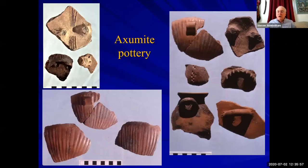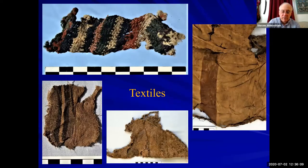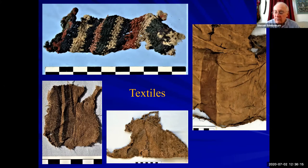Here are some examples of Aksumite pottery that we found — not in the volumes of Indian material, but of course the more we excavate, the more this could change. Some of the textiles, many very utilitarian, come in different fabrics: wool, cotton, linen, and so on.